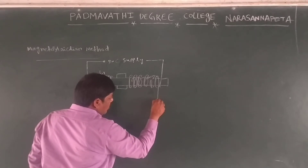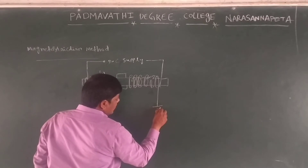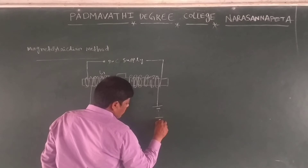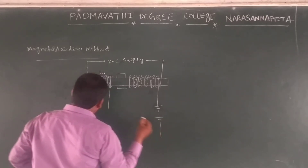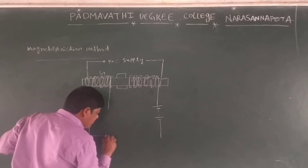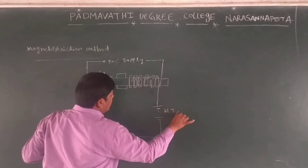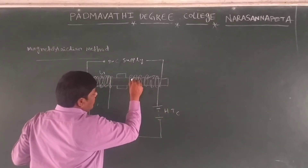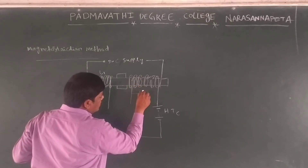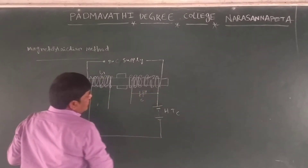One end of the coil is connected with a high tension battery. The other end of the coil is connected with a variable capacitor.